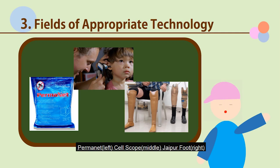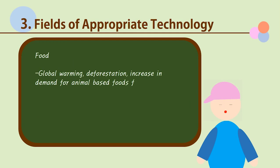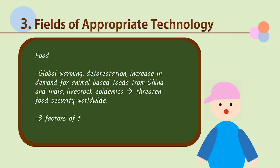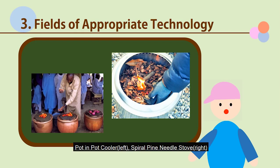The next field we are looking at today is food. Global warming, deforestation, and increase in demand for animal-based foods in populous countries like China and India, as well as livestock epidemics rising from a more connected world, are all factors that threaten food security worldwide. Appropriate technology in this field aims to uphold the three factors of food security: food availability, food access, and food use. The pot-in-pot cooler is appropriate technology that preserves food and prevents food poisoning when there is no electricity to power a refrigerator. Spiral pine needle stoves use pine needles as alternative fuel in developing countries.